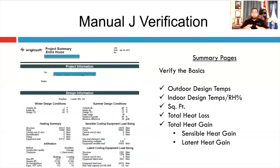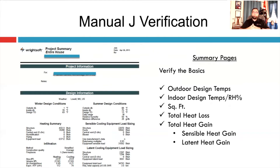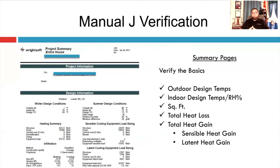When we get the summary page, it's really great for starting to walk through the rest of the system design process. We need information off the summary page to select equipment, and then the details pages to design or verify our duct system. We need to verify the basics to make sure we got everything correct before we submit for a rebate, for code purposes, or before we size the equipment and realize we made a mistake — especially if the numbers are low, make sure you didn't miss anything.